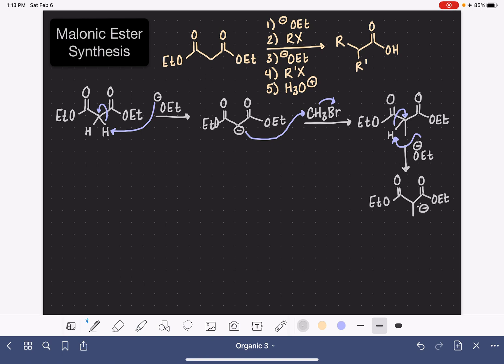Once this enolate has been formed, we can bring in another alkyl halide. I'm going to use something different this time. This time I'm going to use ethyl bromide, so we can have two different alkyl groups, although you could use another of the exact same alkyl group if you wanted the two groups to be the same.